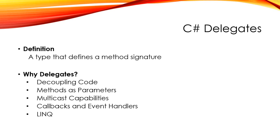So why do we care about delegates? First, they help us decouple our code. We've seen in previous examples how we can extend a class without modifying it by providing a delegate as a parameter to one of our methods. And when we are using delegates as parameters, that means we're passing methods as parameters to other methods. In the functional programming world, these are known as higher-order functions — functions that take other functions as parameters.